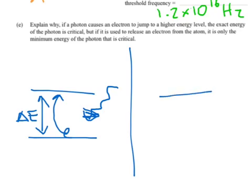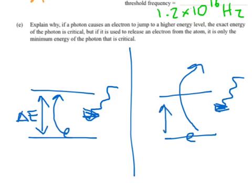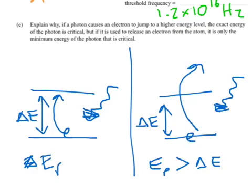In the second case, we're not just trying to jump it up here, we're trying to release it. So, the energy of the photon just has to be greater than that. So, if we would write it like this, energy of the photon has to be greater than delta E in this case. And in this one, the energy of the photon has to be equal to delta E.